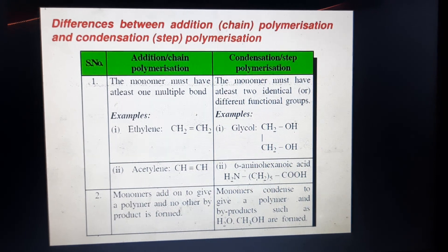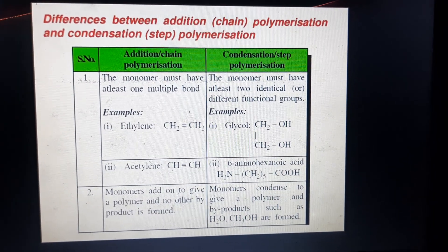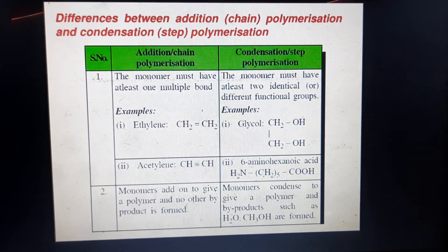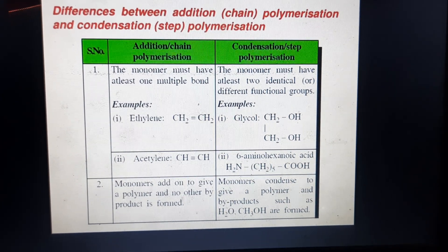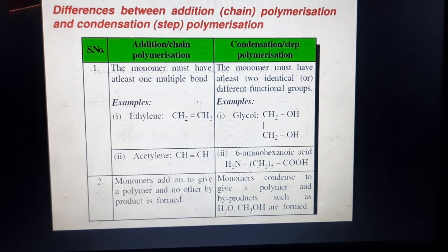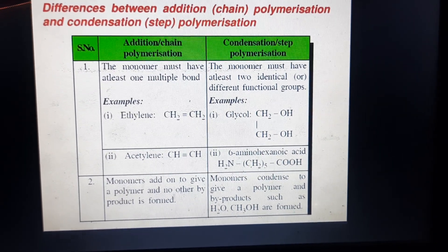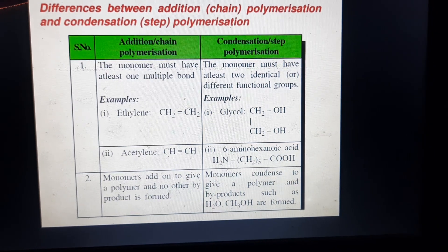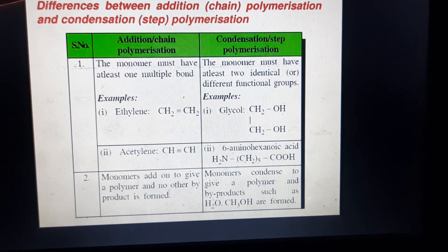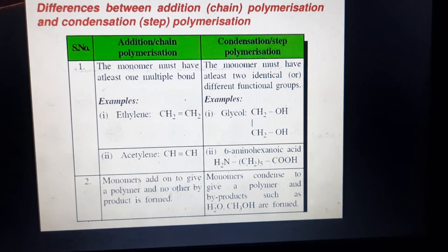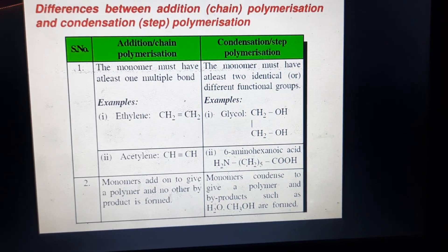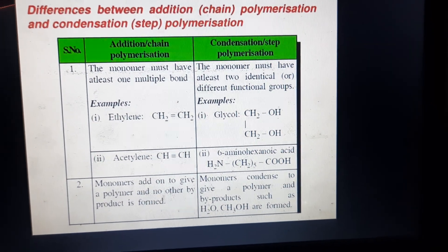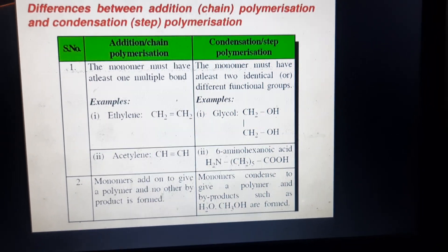The difference between addition (chain growth) polymerization and condensation (stepwise) polymerization. First point: in addition polymerization, the monomer must have at least one multiple bond — for example, ethylene (CH2=CH2). In condensation polymerization, the monomer must have two identical or different functional groups — for example, glycol has two –OH functional groups. A second example: acetylene (CH≡CH) is addition polymerization because it has a multiple bond. Six-aminocaproic acid is an example of condensation polymerization.